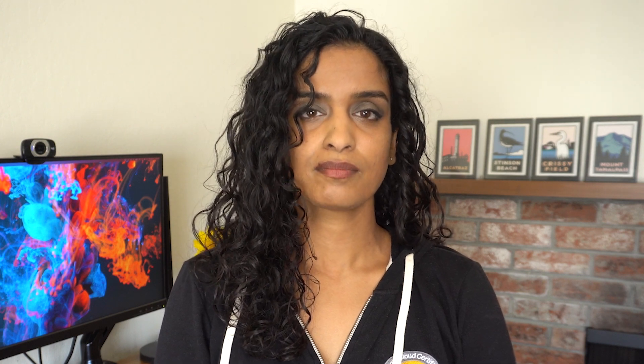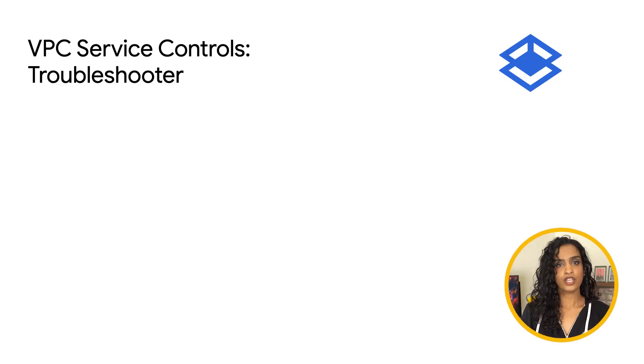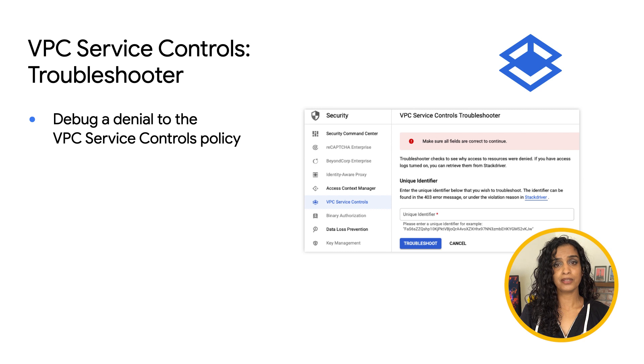Let's talk about VPC Service Controls Troubleshooter. This is a new tool that enables admins to better understand a denial caused by VPC Service Controls. Defining your security perimeter can be tricky while debugging denial errors. You can now easily investigate issues related to VPC Service Controls using the Cloud Console.